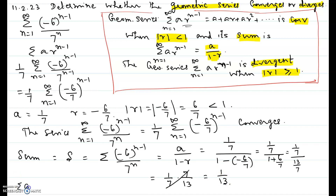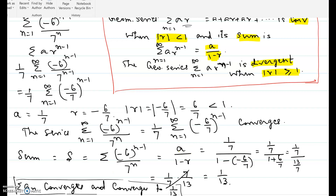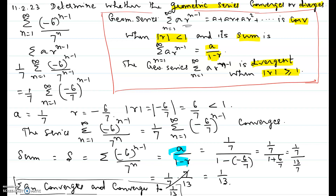The geometric series converges and converges to 1 over 13. In a geometric series whose common ratio is less than 1, we can find where the series converges using the formula a over 1 minus r. Hope this video helps.